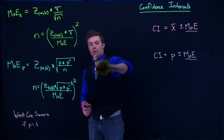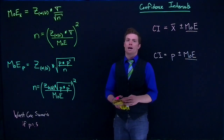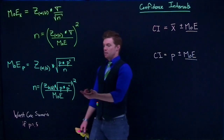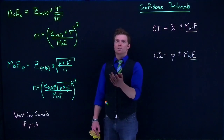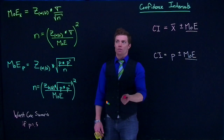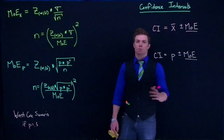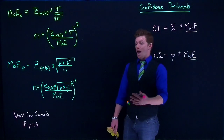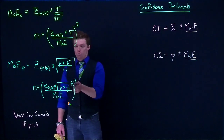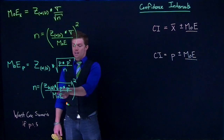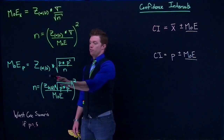Because we have a worst case scenario, we can assume the most spread-out situation possible. When dealing with means we don't have a worst case scenario — the only requirement for standard deviation is that it's a positive number. But for proportions, since P can't be less than zero or greater than one, we do have a worst case scenario. So we assume worst case scenario, set whatever margin of error we want — 3%, 5% — plug it in, and use our alpha to find our z-score.